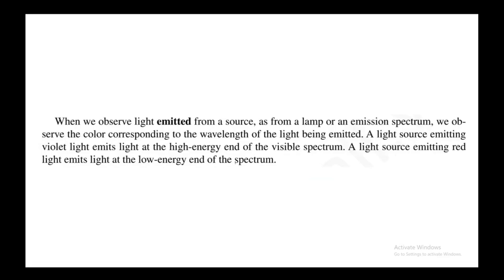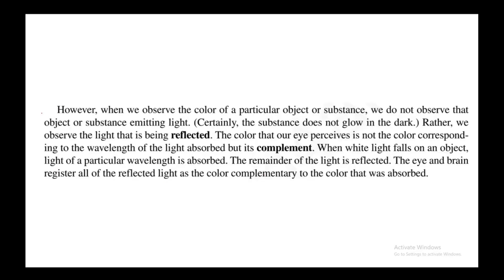When we observe light emitted from a source such as a lamp or emission spectrum, we observe the color corresponding to the wavelength of light being emitted — a light source emitting violet light emits light at the high-energy end of the spectrum. However, when we observe the color of an object or substance, we do not observe it emitting light — the substance does not glow in the dark. Rather, we observe the light that is being reflected.